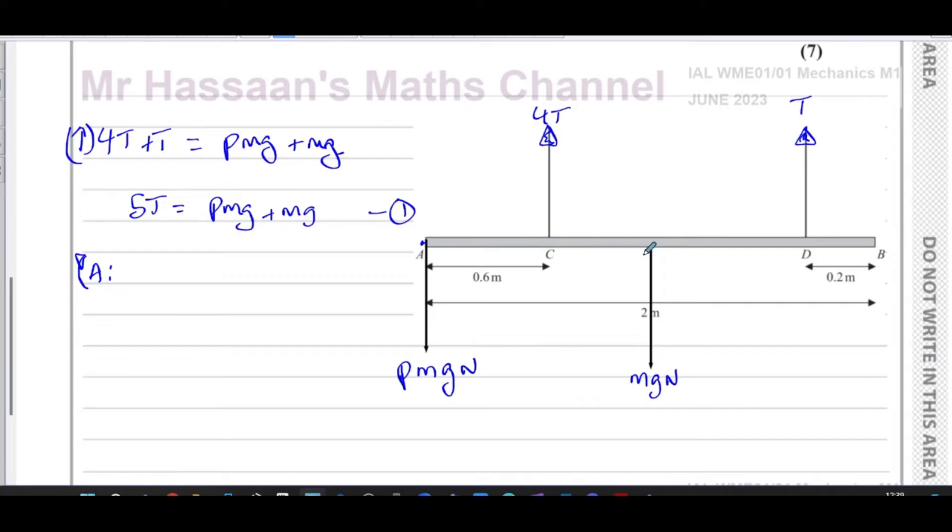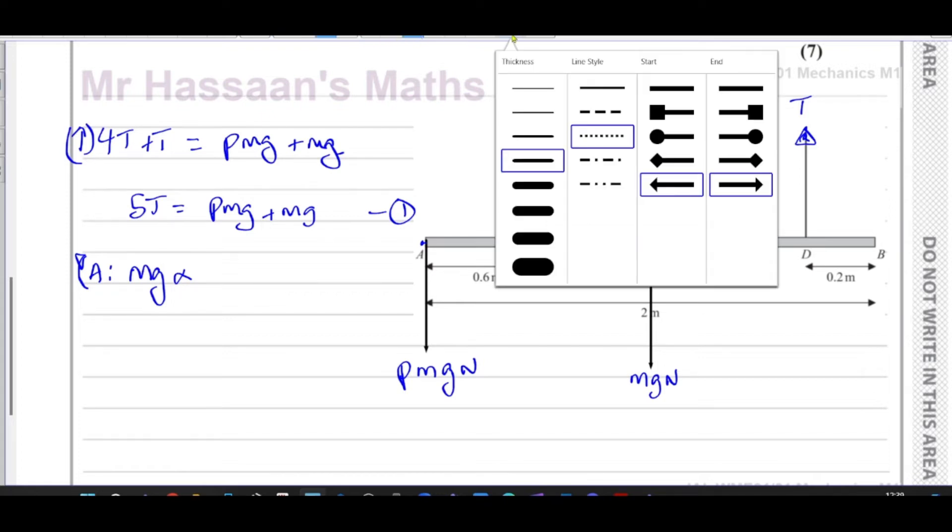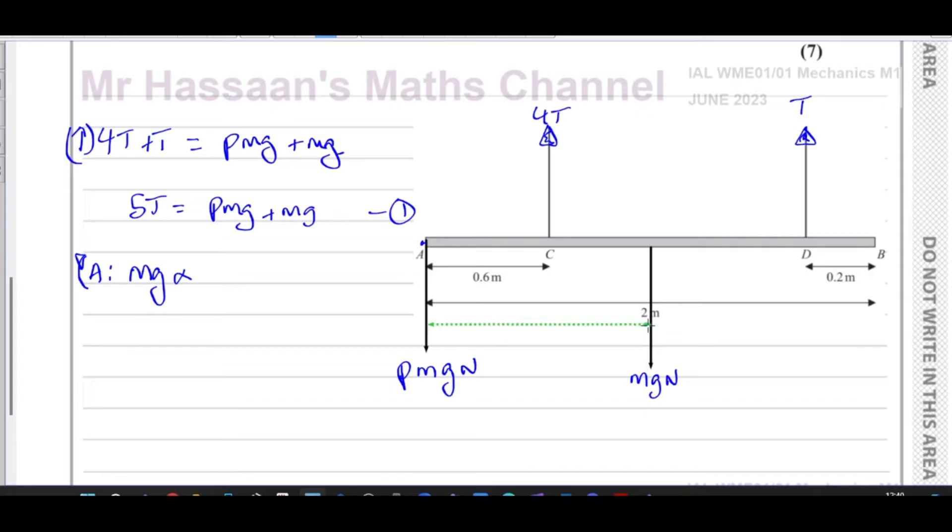If A would be the pivot, then the clockwise moments would be mg only. We don't take - if we take moments about A, then the Pmg won't have any effect and can be eliminated from the equation. So I'm going to have mg times the distance. The distance between these points, that's exactly halfway along the beam, which is going to be 1 meter. So it's mg times 1, and that's the only clockwise moment.